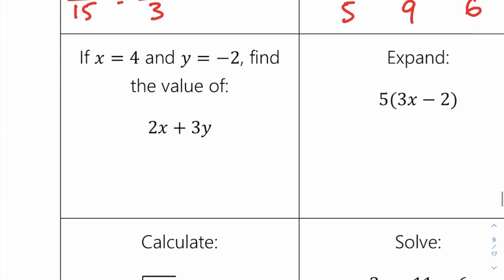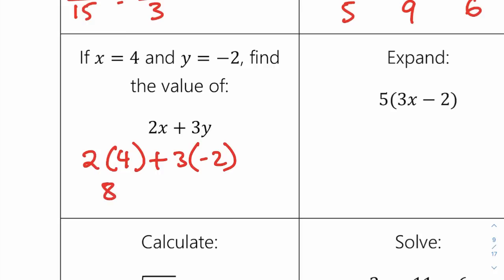If x equals 4 and y equals minus 2, find the value of 2x plus 3y. Let's substitute the numbers in — I know it's a calculator paper, but always substitute so you get a mark. So 2 times 4 plus 3 times minus 2, which is 8 minus 6, equals 2.